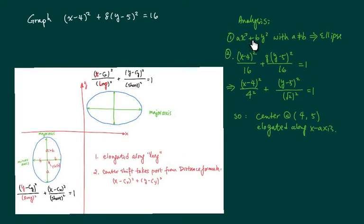The analysis looks something like this. If you have x squared and 8y squared, if you were to open this up with a does not equal to b, you have an ellipse. Second thing is we want to get rid of this 16 by dividing it. This helps us to see which side the ellipse is elongated along. We need to see what number on the bottom that's larger.